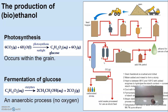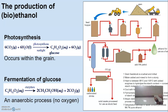For the production of ethanol, we start with photosynthesis — most of our processes start with photosynthesis. Going back to Year 9 science: carbon dioxide and water, with sunlight, gives us glucose and oxygen through photosynthesis.